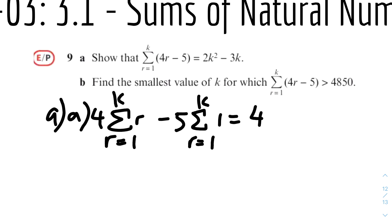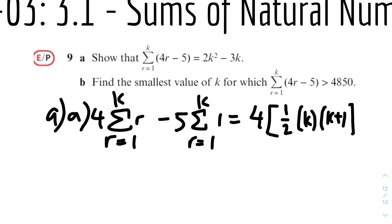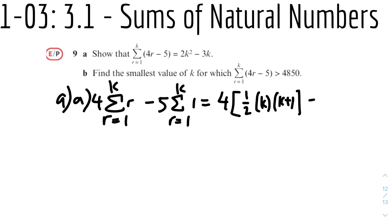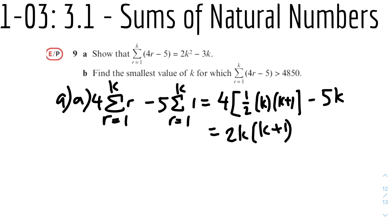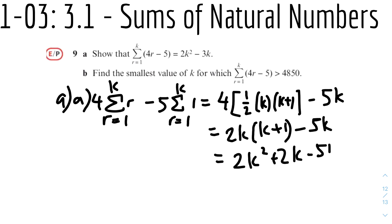It equals 4 times the sum of natural numbers, which is half times k times k plus one, minus 5 times the sum of ones which equals k. So it's 4 times half k(k+1) minus 5k, which simplifies to 2k(k+1) minus 5k, giving 2k squared plus 2k minus 5k, and therefore 2k squared minus 3k. QED.